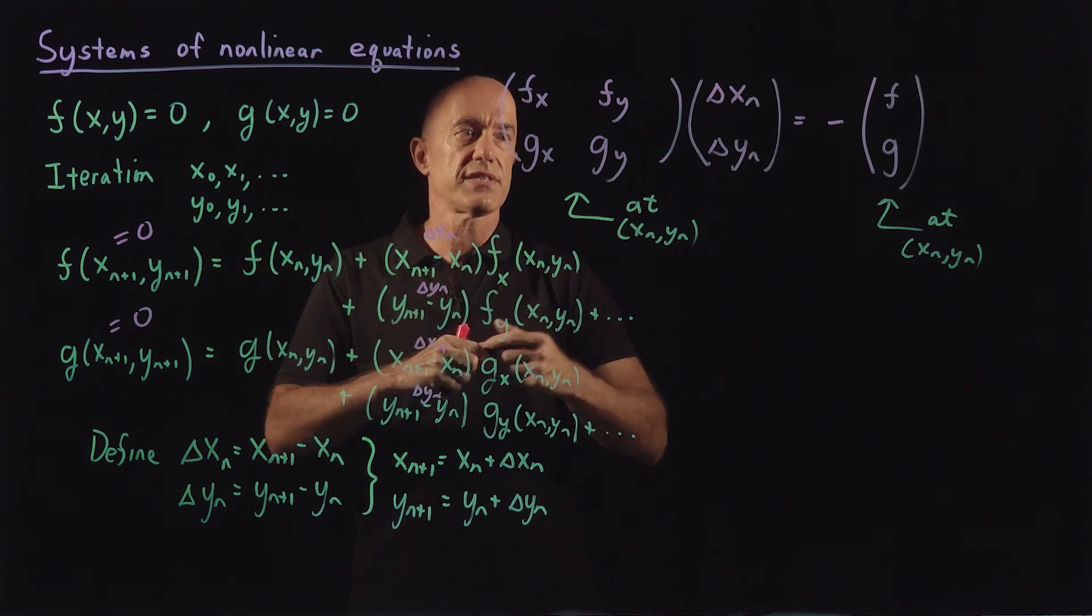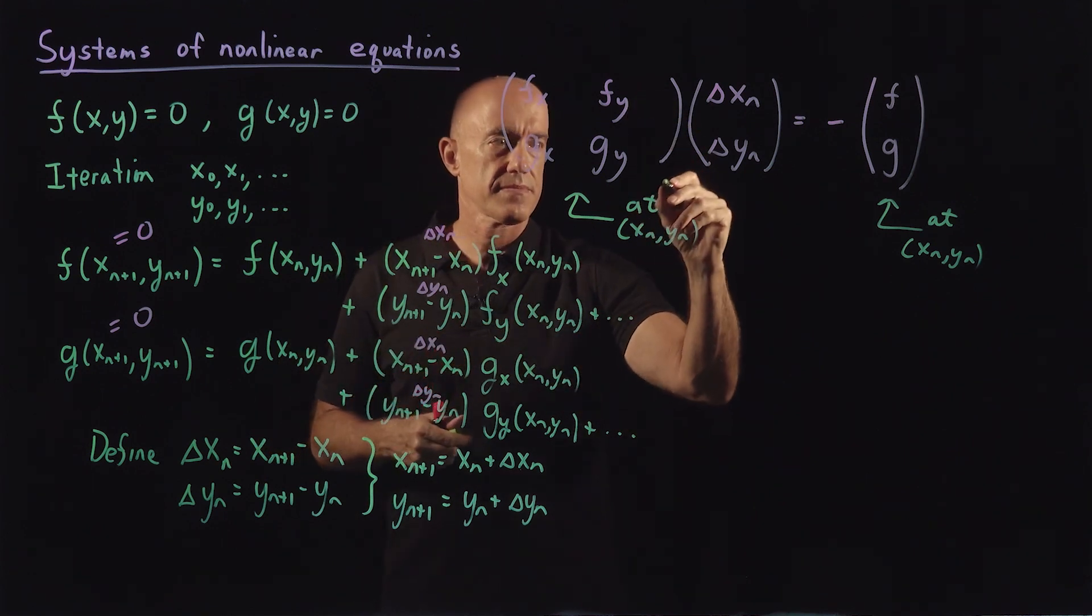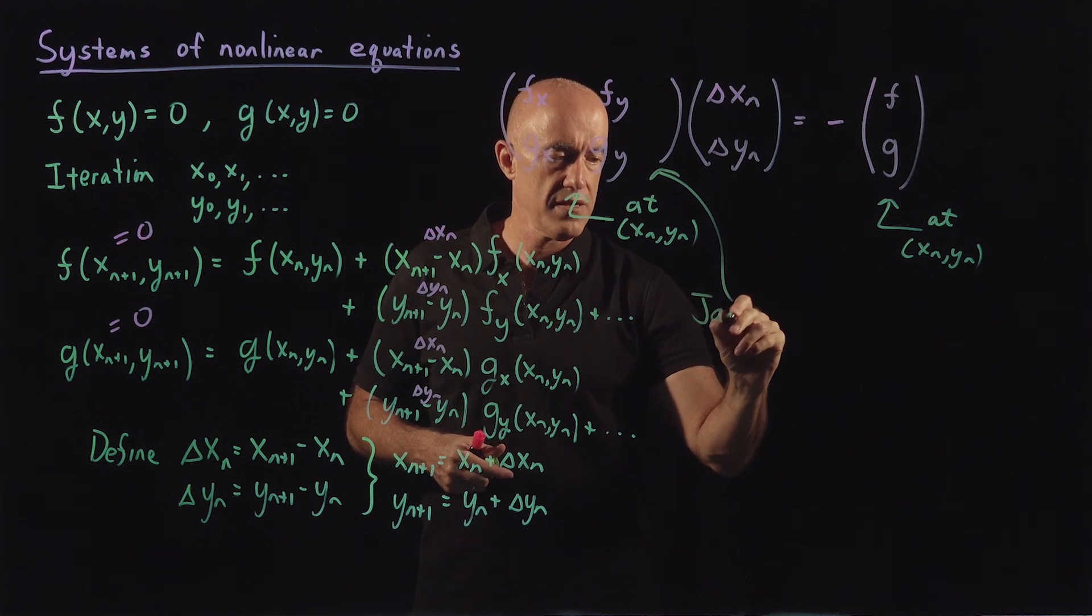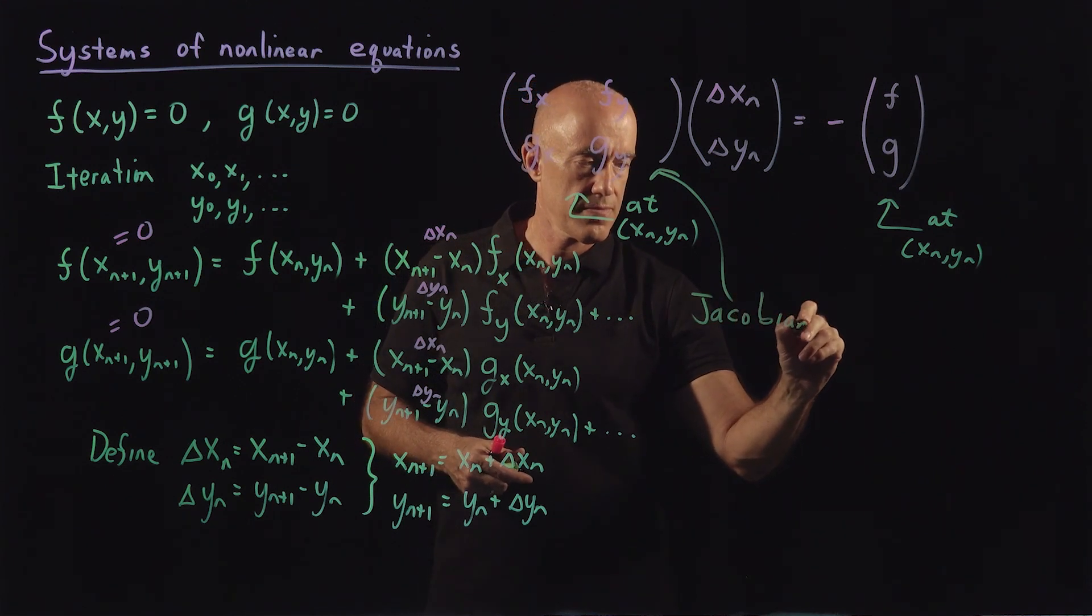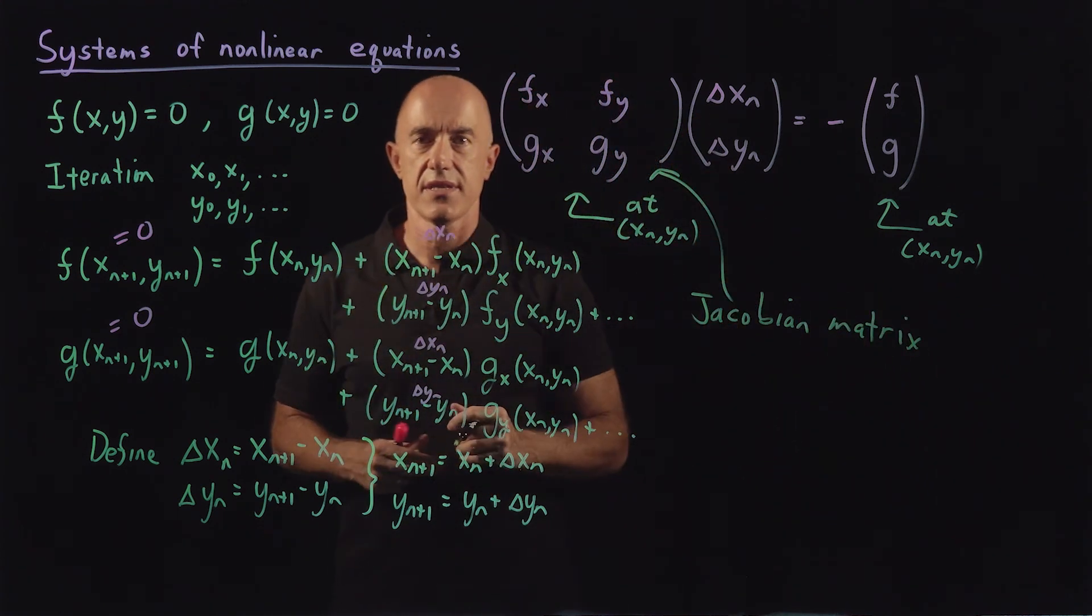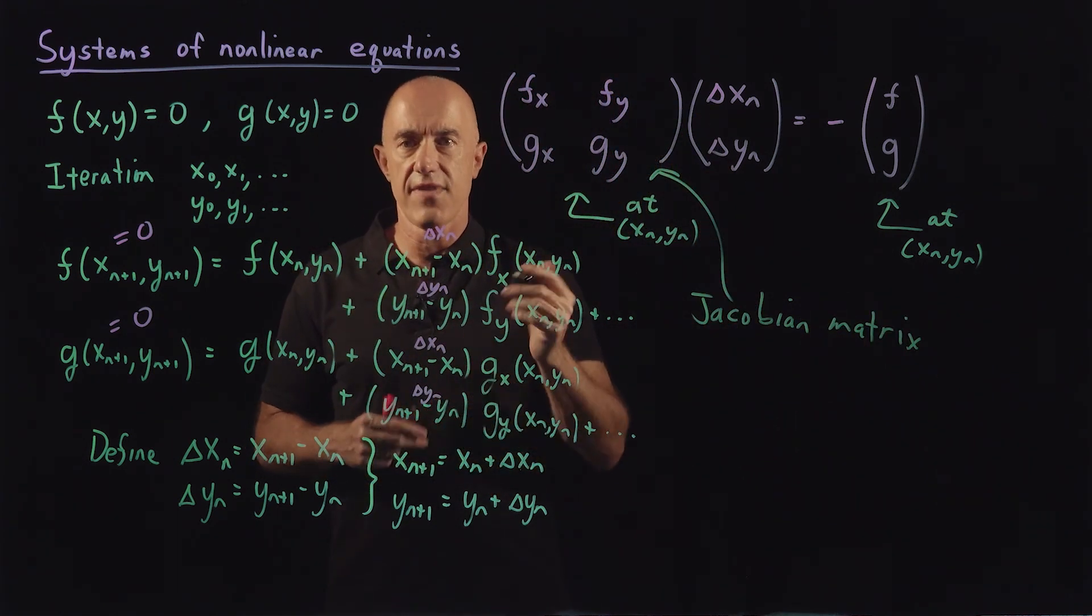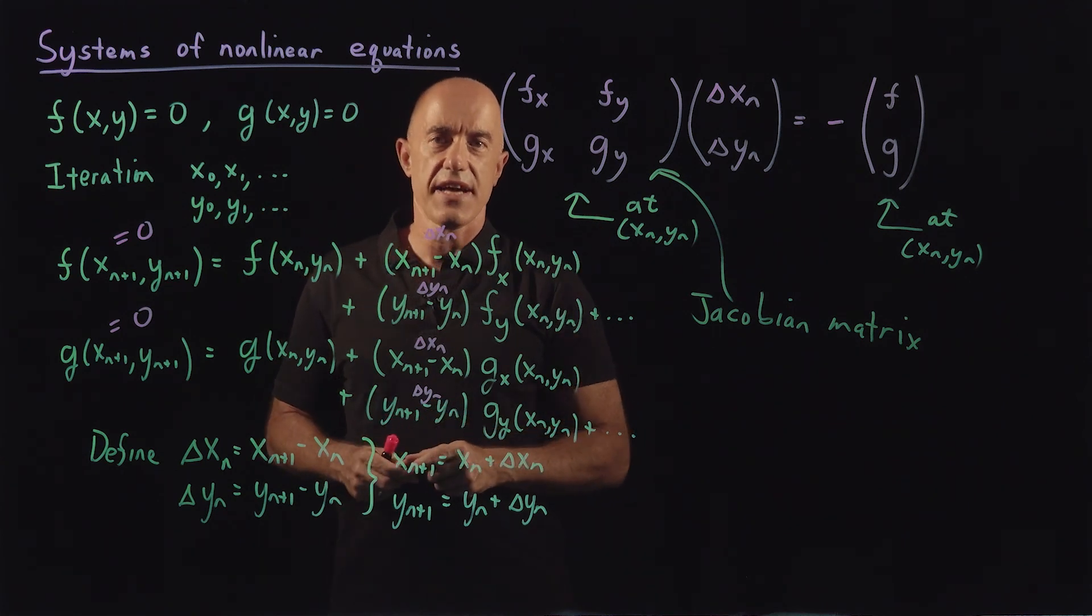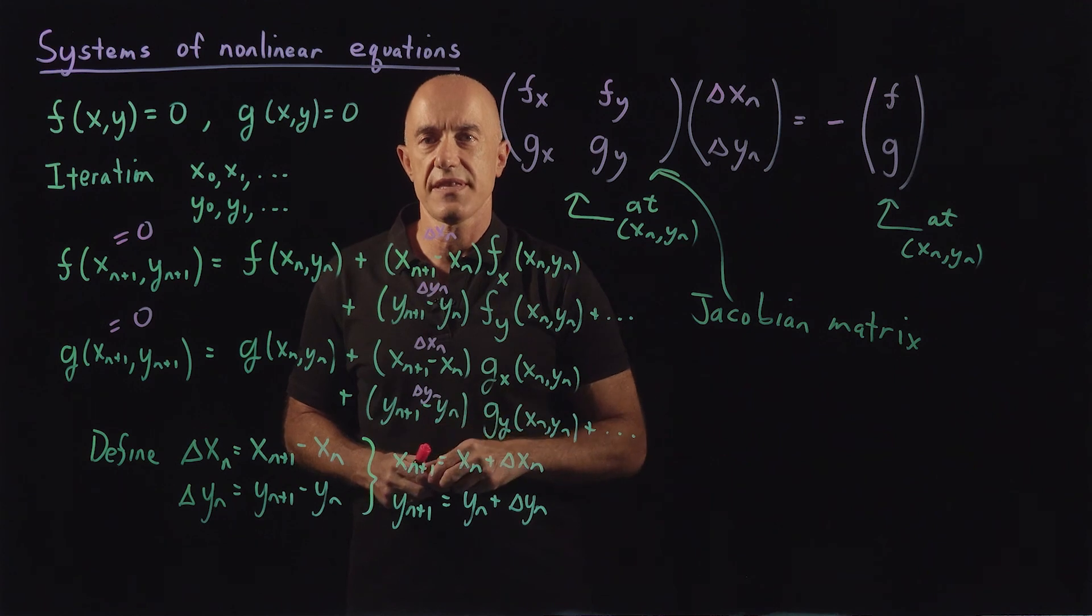This matrix here has a name. This is called the Jacobian matrix. You also see this matrix in a course on vector calculus. I'm Jeff Chasnov. Thanks for watching and I'll see you in the next video.